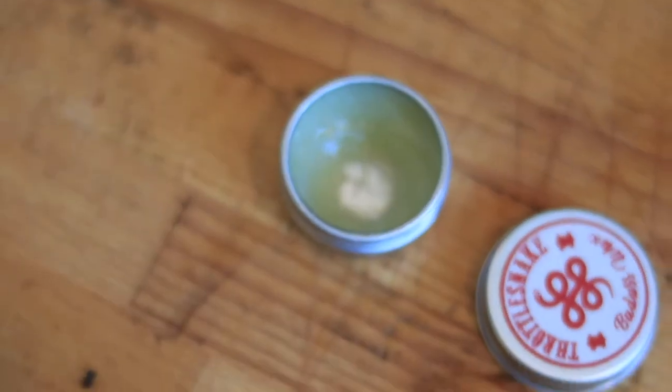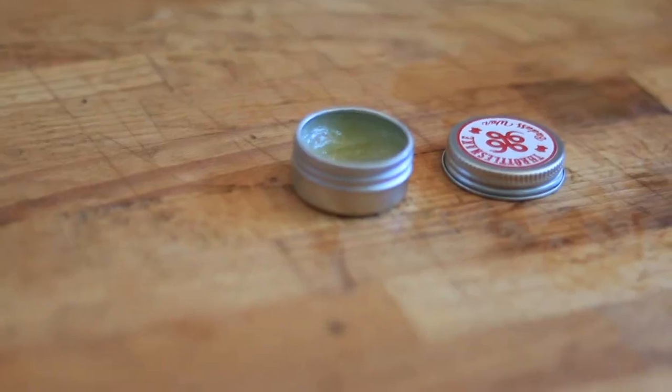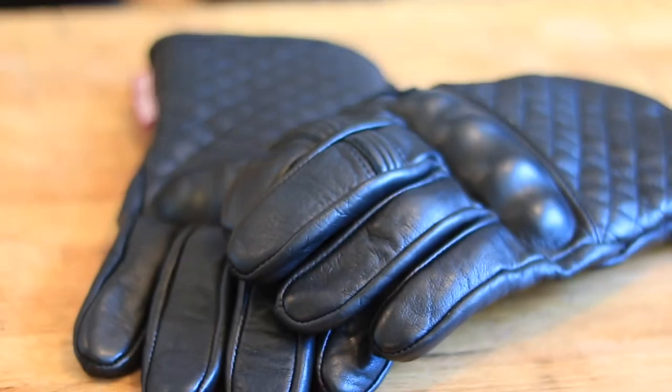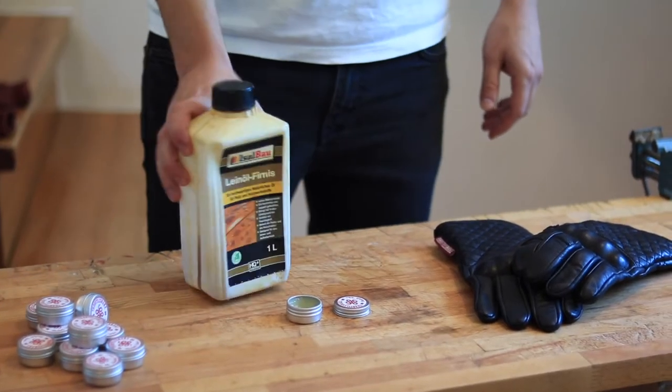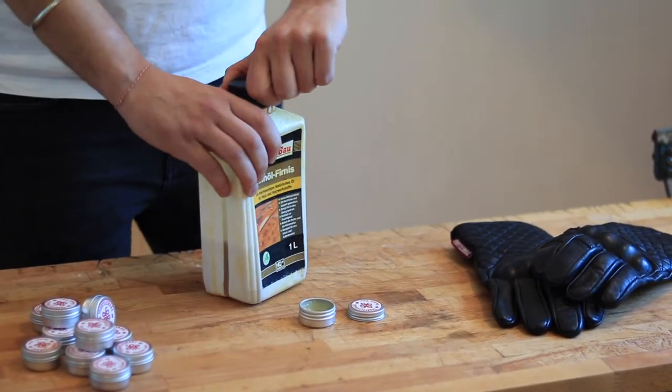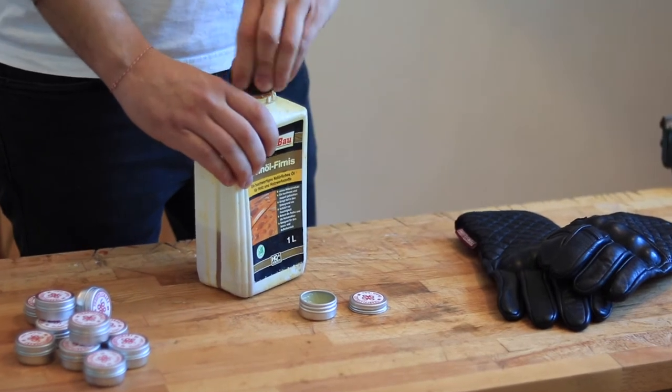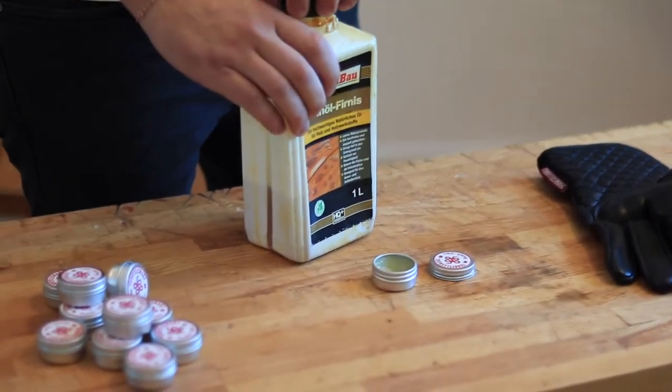In this third and last round, we will be pimping the badass wax recipe. Imagine you have already used most of the tin can that comes for free with all Throttle Snake gloves, and now you don't have enough for a second wax. Well, no worries!